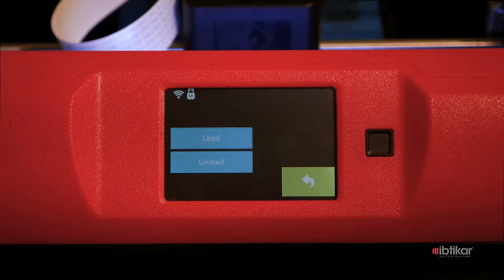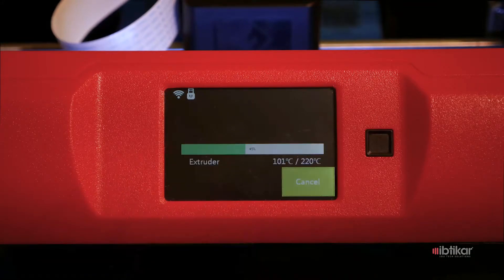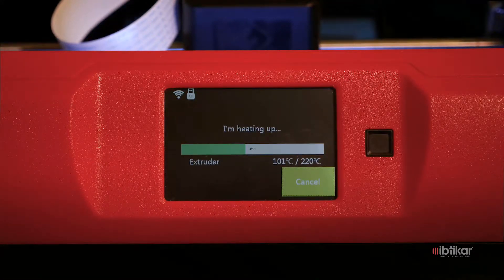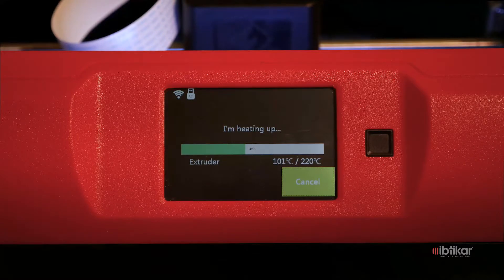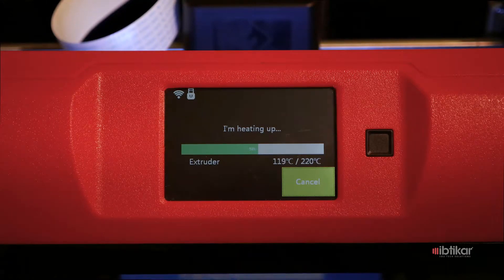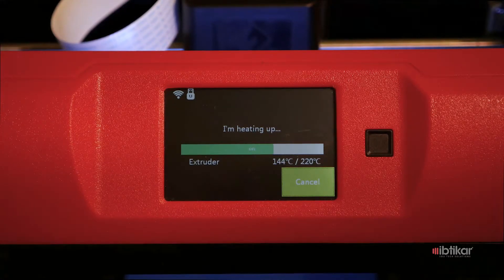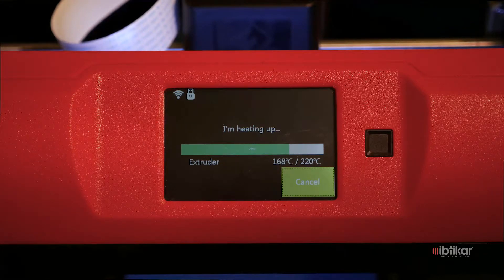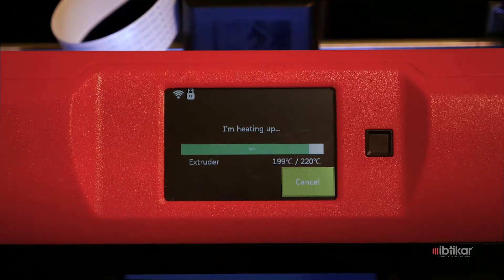On the next screen that appears, press Load and wait for the temperature to get to 220 degrees. It is recommended you do not use the Unload command when changing filament. Using Load prevents any melted filament going back into the filament loading section of the printer head.